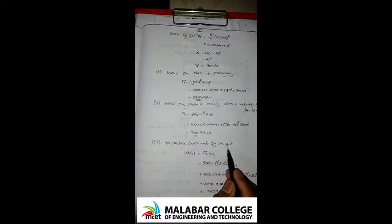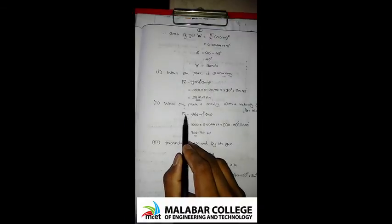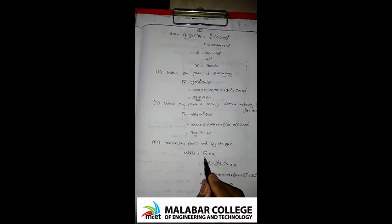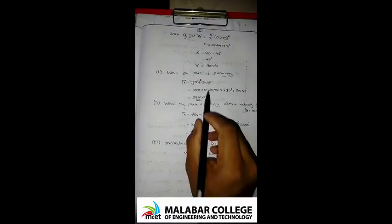The third quantity is work done per second. Work done per second equals Fx × u. We also have the normal force. If we work for Fx and add sinθ and substitute the other values, the result is 7453.5 N·m/s. Since N·m/s equals J/s equals watts, the power in kilowatts is derived from this work per second value.